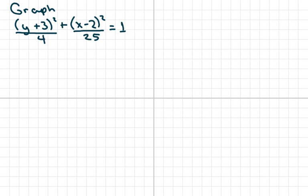Hi everyone. We're going to graph this ellipse. We know it's an ellipse because it has a positive here. And we know the center comes from the numerator. So our center is 2, negative 3.